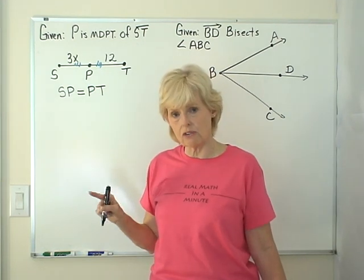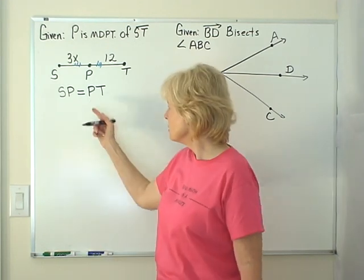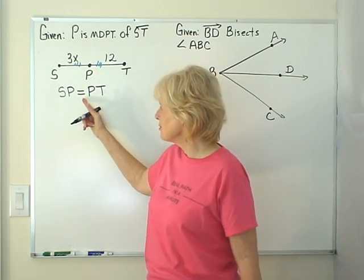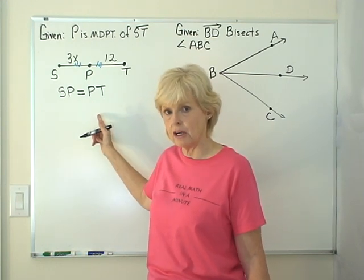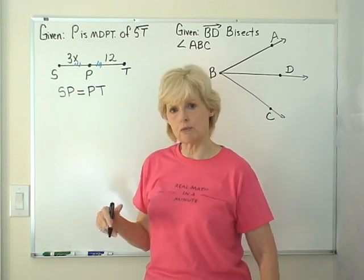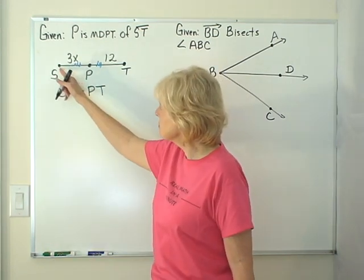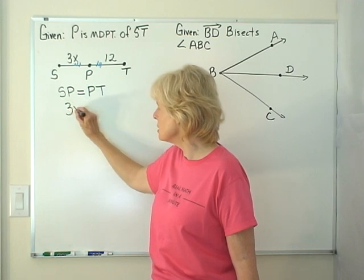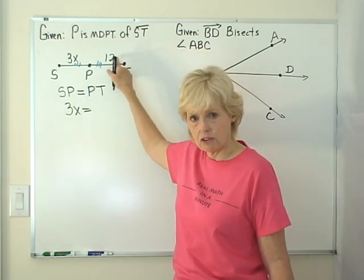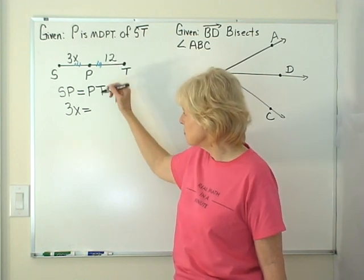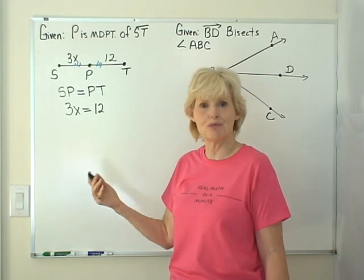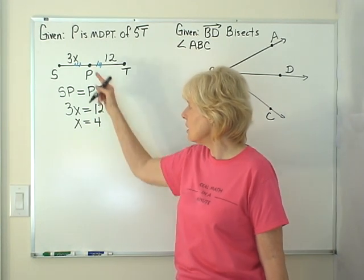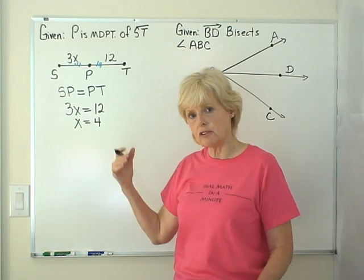Notice that I did not put any symbols over the top because when we're talking about distance, we talk about equals. We talk about segments, we talk about congruent. So midpoint tells us we've got equal distances. And I look up here if I want to solve for X because we can put some algebra in here very easily. So if the distance from S to P is 3X and the distance from P to T is 12, I can substitute in and use my algebra, divide both sides by 3 and X is equal to 4.